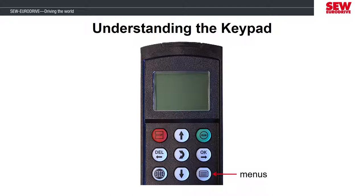The square icon with the lines inside of it is the menu button. You can press this to see the different functions of the keypad, such as the parameter tree, the upload or download of parameters from the MobiDrive, manual operation, and others.